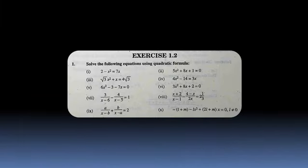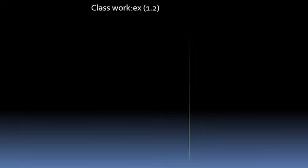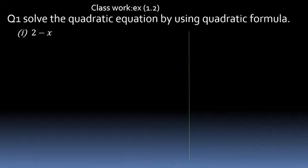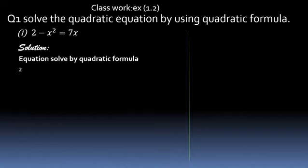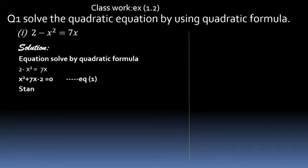Exercise 1.2 has 10 questions with 10 parts. We will solve the first part. Question 1: Solve the quadratic equation by using the quadratic formula — 2 − x² = 7x. First, we change this equation to standard form. Rearranging: x² + 7x − 2 = 0. Shifting x² and 2: x² + 7x − 2 = 0. This is standard quadratic equation number 1.